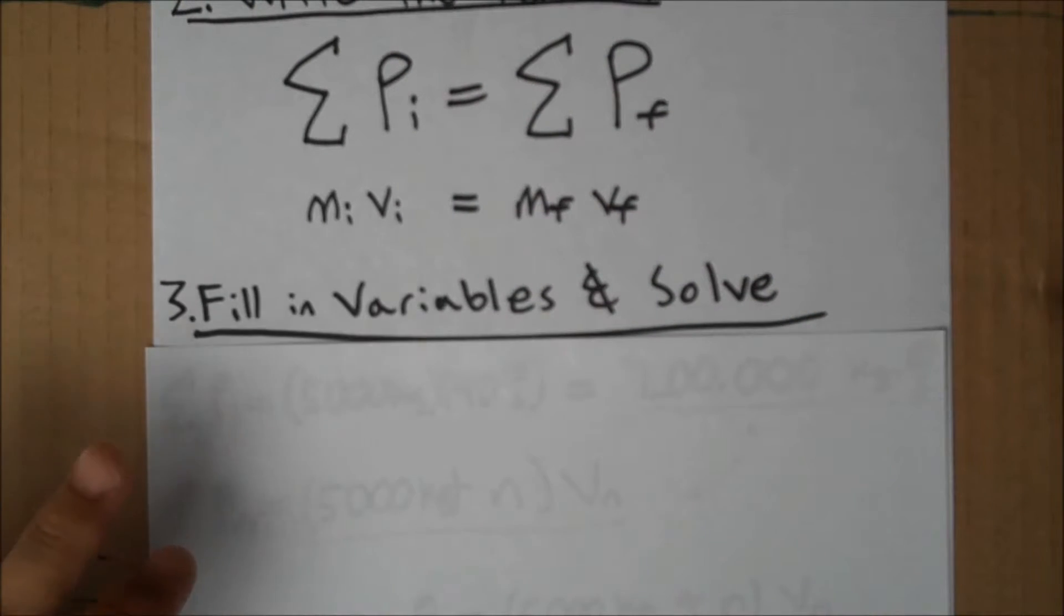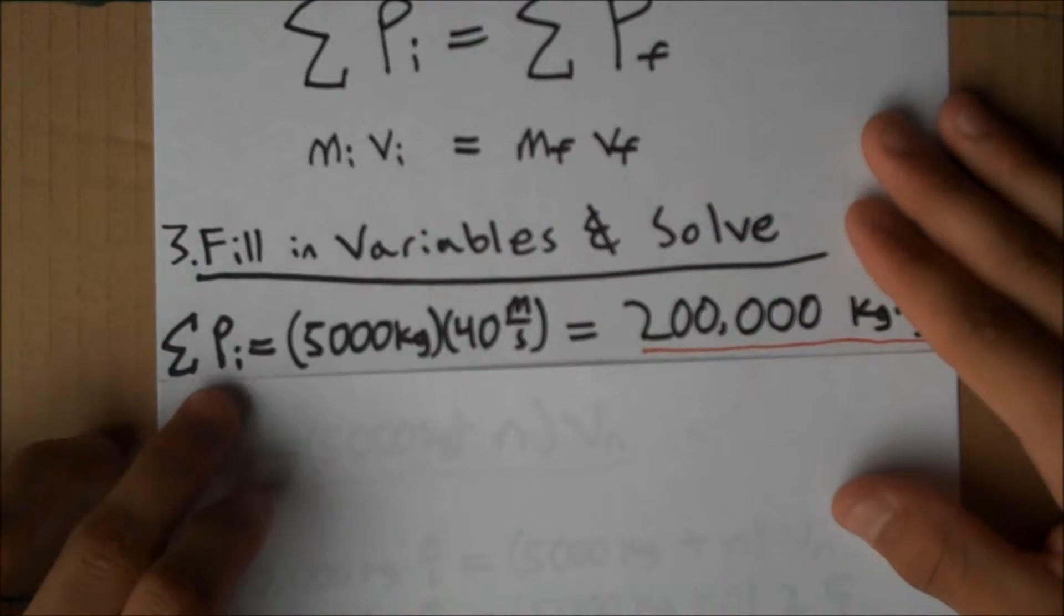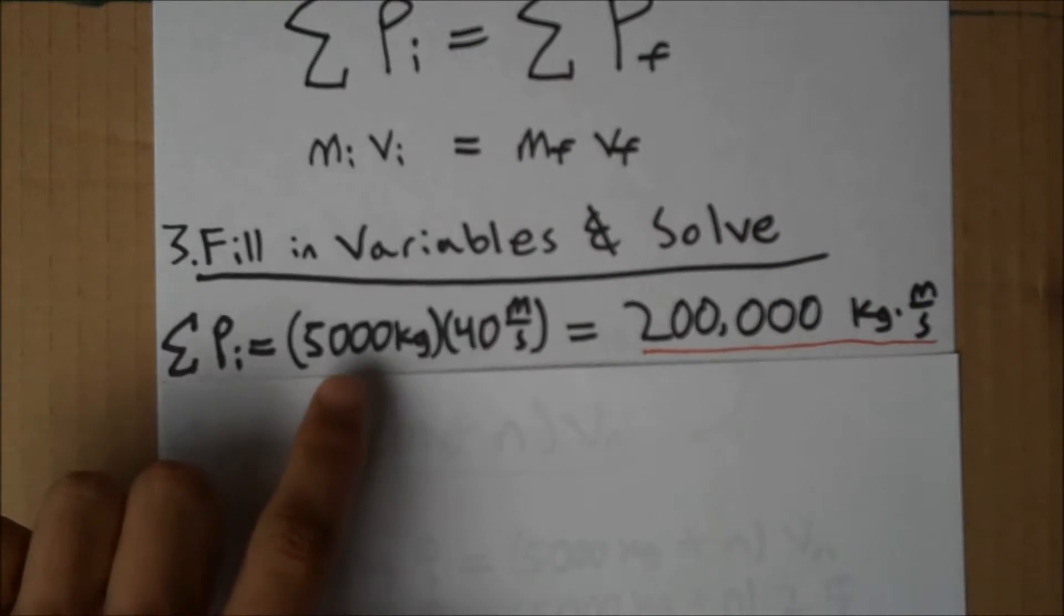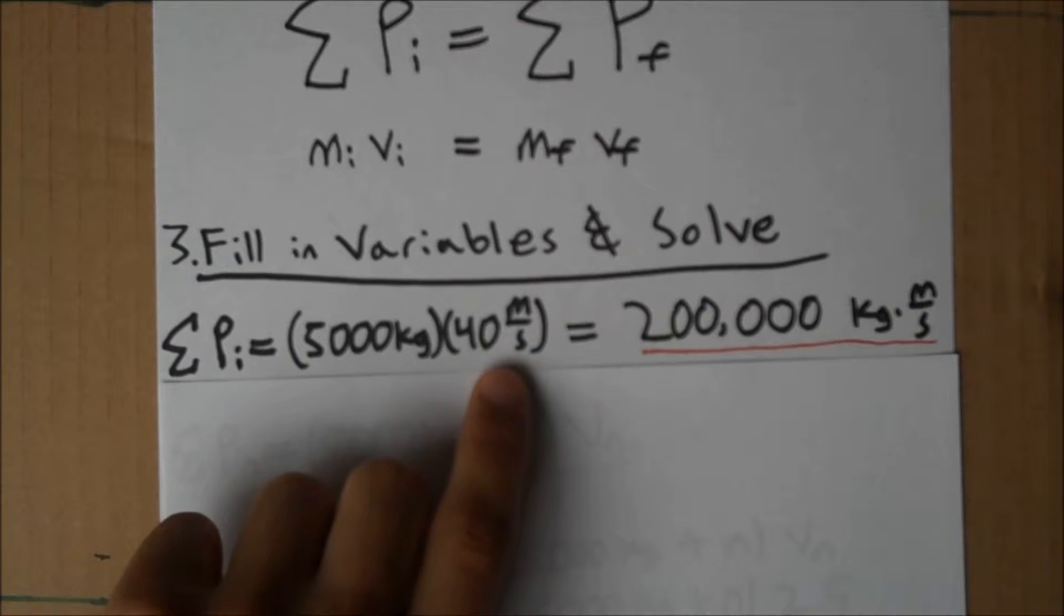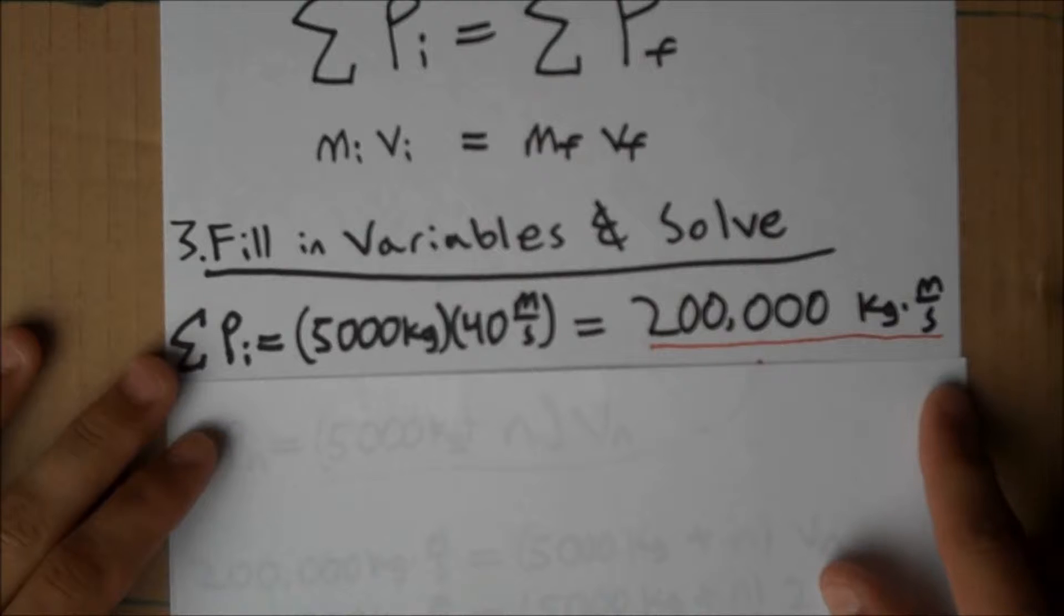Third step, let's fill in the variables and solve. So, the initial momentum, which we'll find first, is just the momentum of the bulldozer, which has a mass of 5,000 kg and a velocity of 40 meters per second. Multiplying, we get 200,000 kg meters per second.